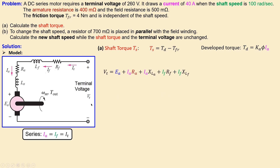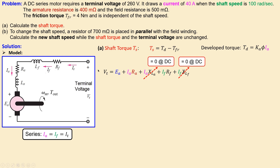We set up the Kirchhoff voltage law between the two nodes. The terminal voltage equals the sum of voltages across all five elements: the back EMF, field resistance, field inductance, armature resistance, and armature inductance. Since this is a DC steady-state condition, the inductors have zero reactance, so we use a simplified expression with only the resistors and back EMF.